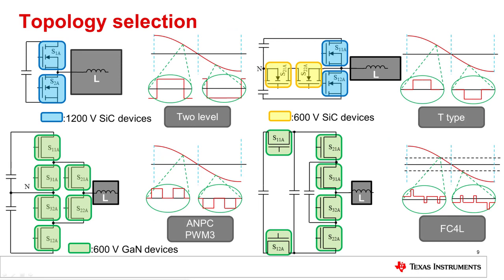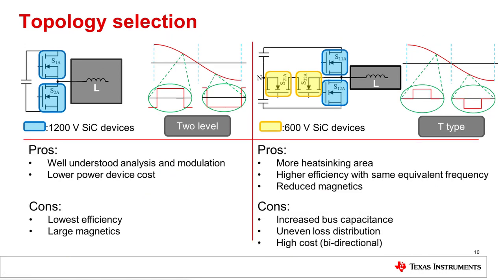To determine the best topology for a 5-kilowatt grid tie converter, several topologies were analyzed. For 1200-volt devices like silicon carbide MOSFETs, the two-level and T-type topologies were investigated. For 600-volt GaN devices, the three-level ANPC and four-level flying capacitor topologies were investigated. The two-level topology has the advantages of simple control and the minimum number of devices, and the half-bridge design and control is well understood. By looking at the circuit schematic, it would seem to be the best topology — but why are many PV inverters adopting the T-type topology instead?